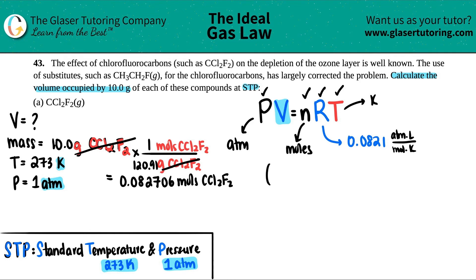The pressure was one. The volume is what we're solving for, so I'll say that this is X. And then this is equal to the moles 0.082706 times the R value of 0.0821 times the temperature, which is 273.